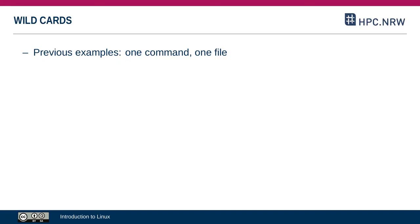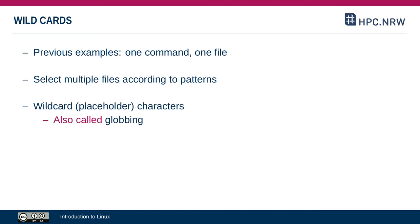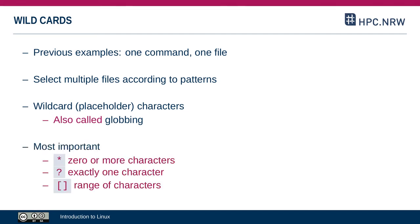So far, every command has been for one file. You can, however, also specify multiple files using what's called a wildcard. A wildcard is a kind of placeholder that specifies a pattern — for example, all files that begin with T. It's also called globbing. If you ever hear the term regular expression, that's kind of similar but not the same thing. The most important wildcards are three: the asterisk matches zero or more characters, the question mark matches exactly one character, and square brackets let you specify a range of characters like zero through nine. You can combine these in multiple ways.